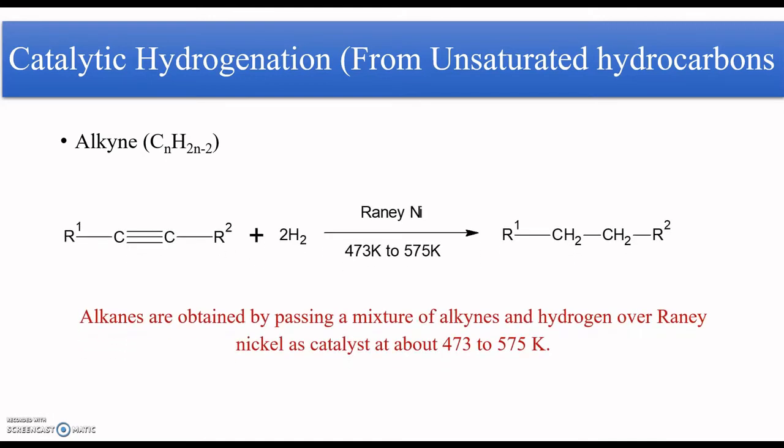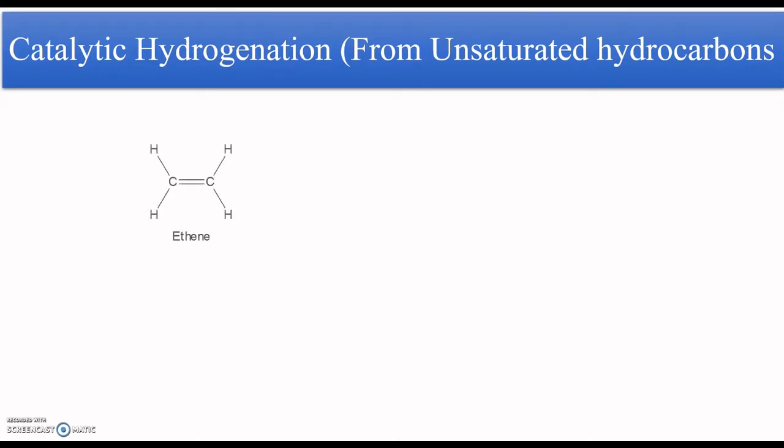We can also prepare alkanes from alkynes. Alkynes are compounds containing a carbon-carbon triple bond, generally represented by CnH2n-2. Since there is a triple bond, we require a 1:2 ratio of alkyne to hydrogen in the presence of Raney nickel at 473 to 575 Kelvin to give the corresponding alkane.